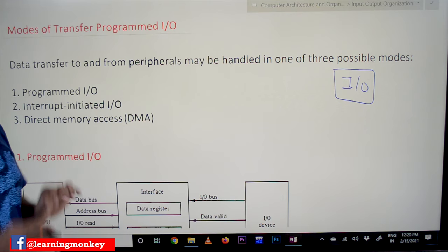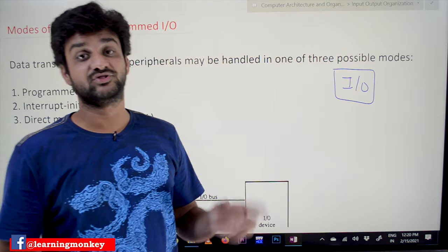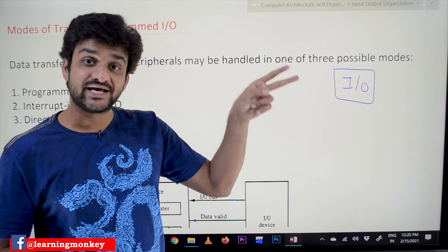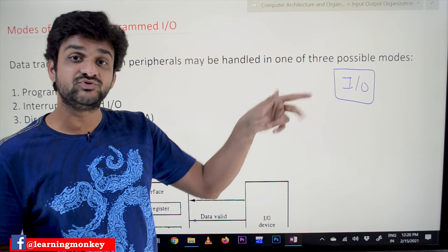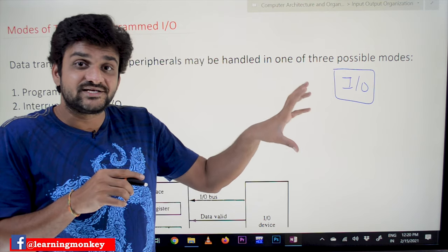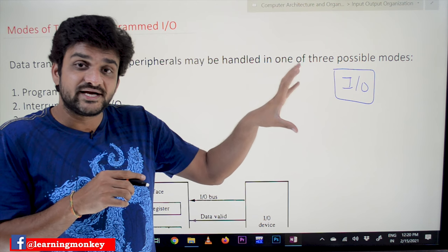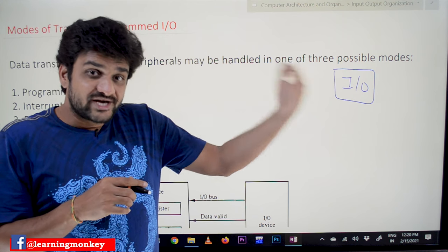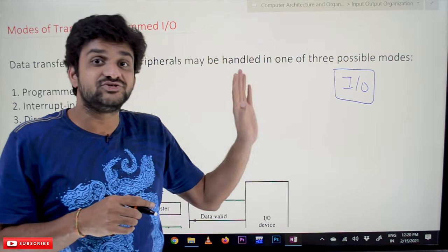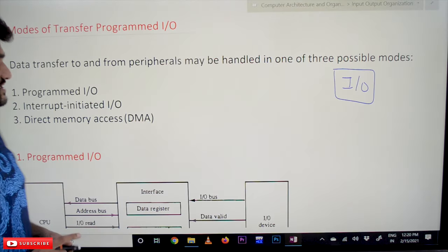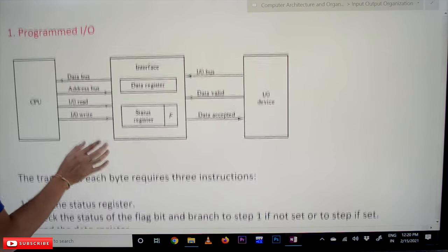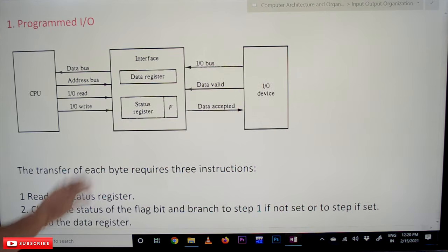In this class we will try to understand programmed I/O. The concept of programmed I/O has already been discussed, where we have seen the lines of code which are used by the CPU, which continuously run to identify whether the data provided by the I/O device is present in the I/O register or not. Let's understand it with a block diagram of programmed I/O.